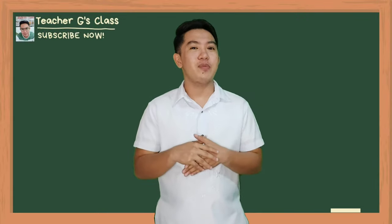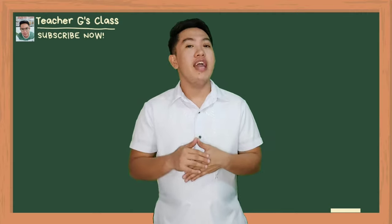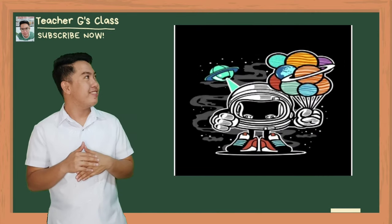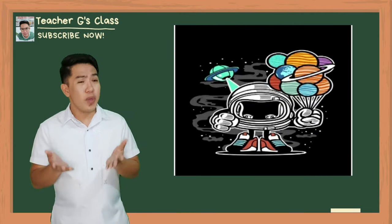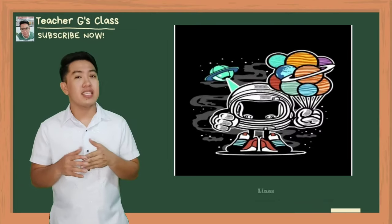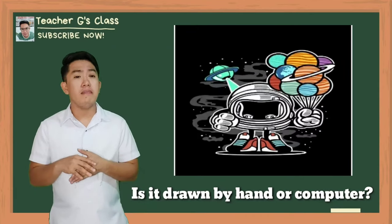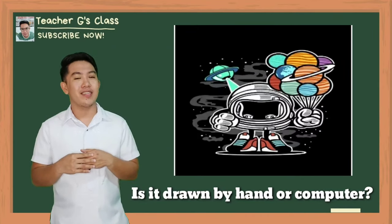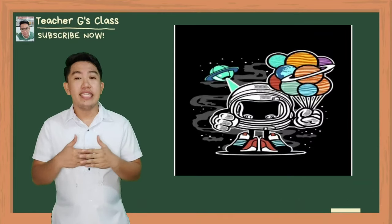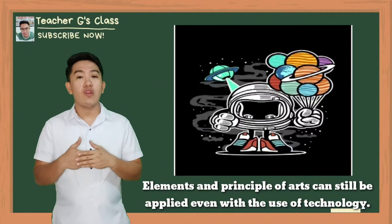From the pictures that I have presented to you, I know that you get some of the ideas between the difference of traditional and digital art. Now let's take a look at this picture. As we observed, we could see elements of arts — lines, shapes, and colors are used. Whether it is drawn by a computer or hand, we can state that the elements and principles of arts can still be applied even with the use of technology.